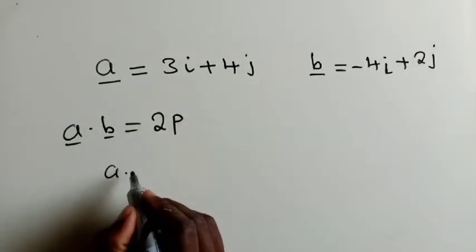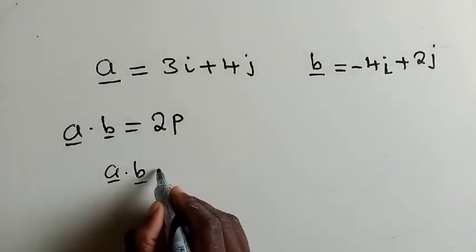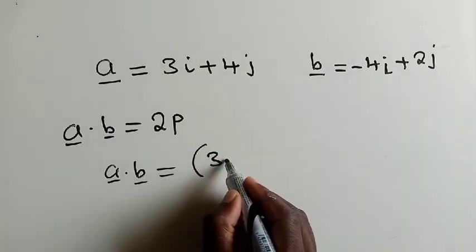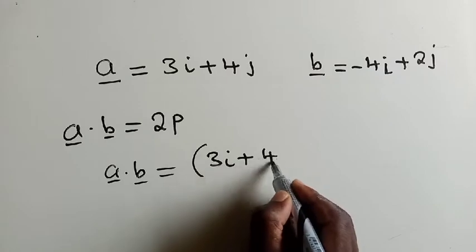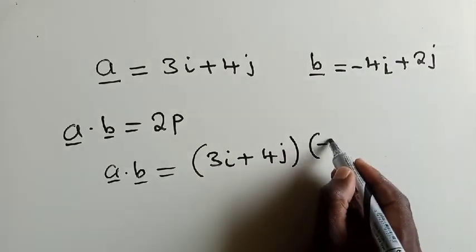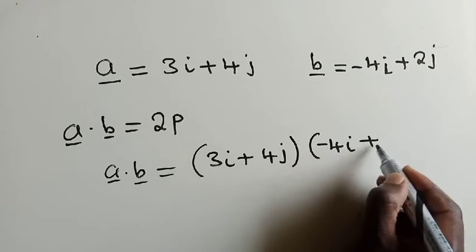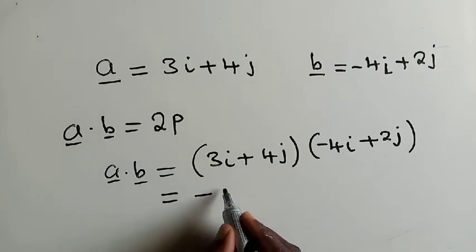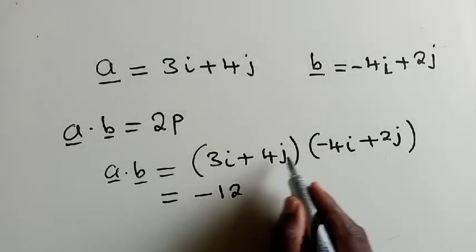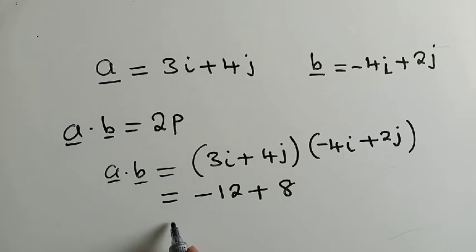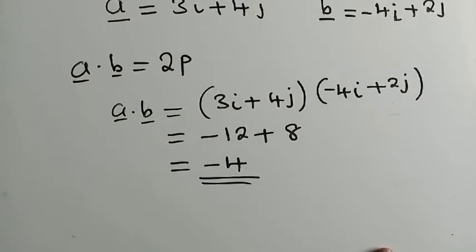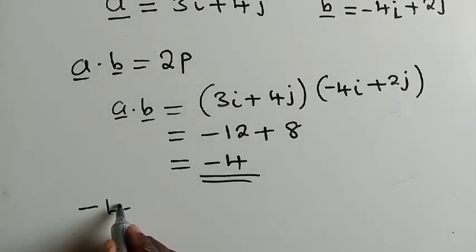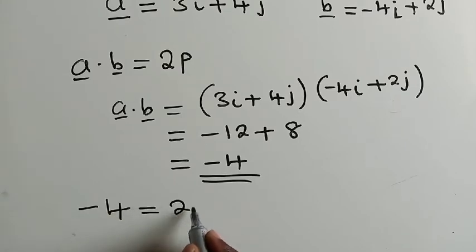Very simple. We just need to find the dot product. So the dot product here of vector A and B would just be to multiply 3 times negative 4, which is negative 12, 4 times 2, which is 8. And when we work out things here, we find that our dot product is equal to 4. So since we have found the dot product to be equal to 4, so we can say negative 4 is equal to 2p.